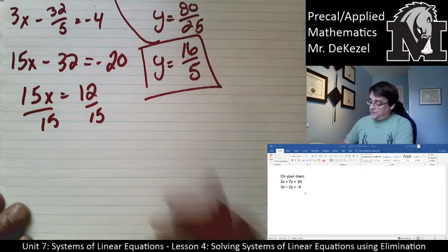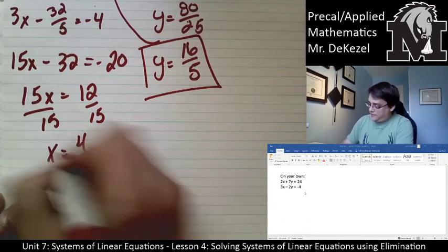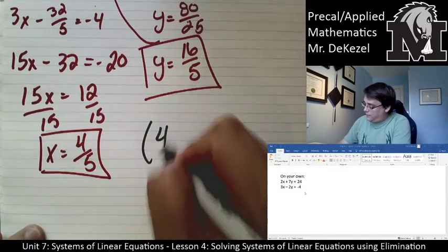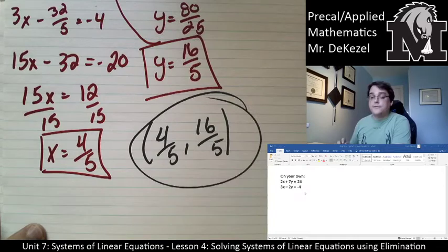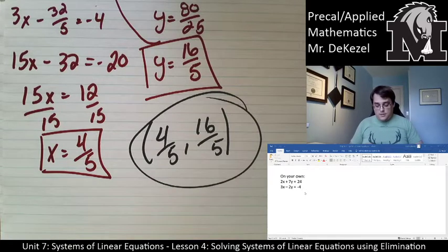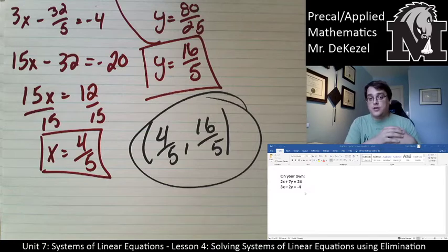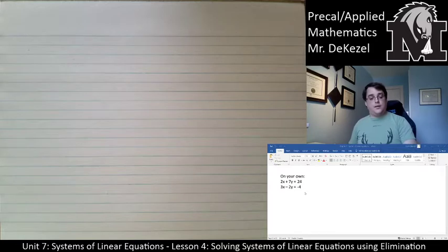Dividing both sides by 15: x = 12/15 = 4/5. Our solution is (4/5, 16/5). If you didn't get that, go back and see where you went wrong — fractions can definitely be tricky, especially when you need to plug them into another equation.